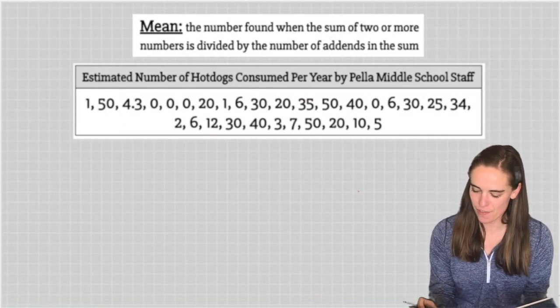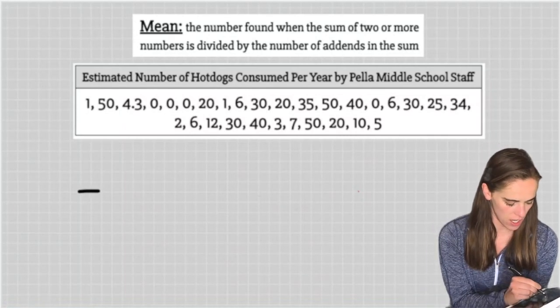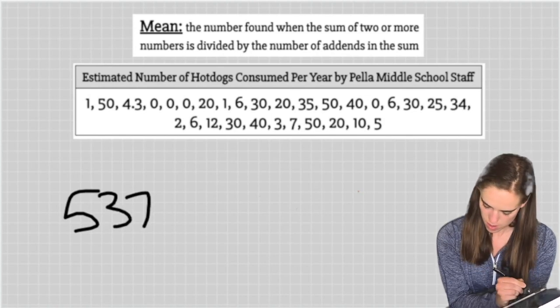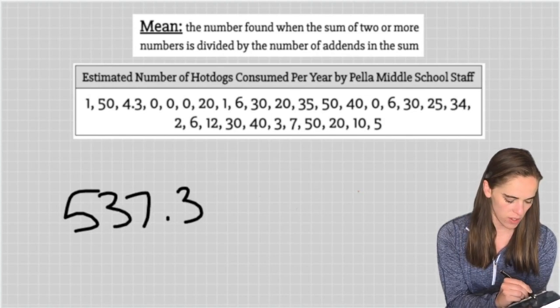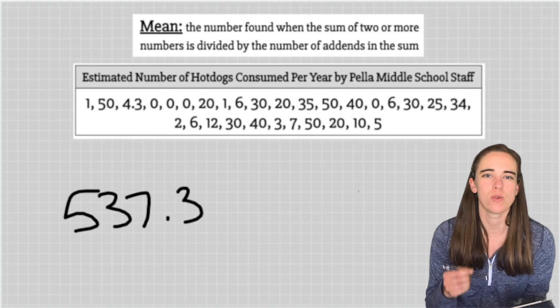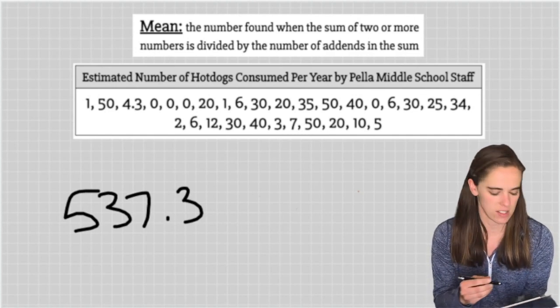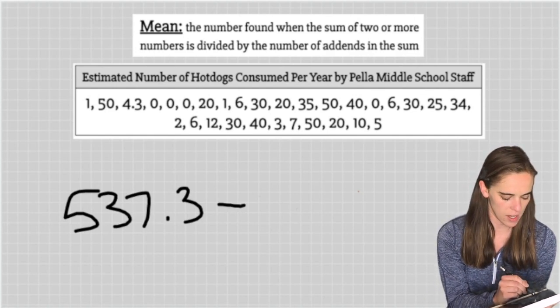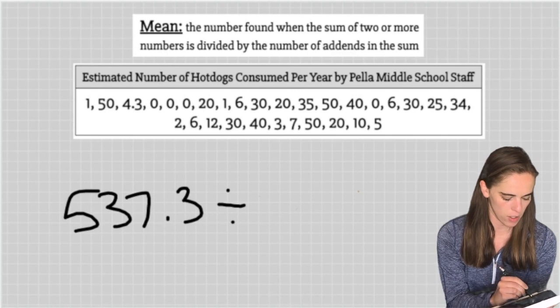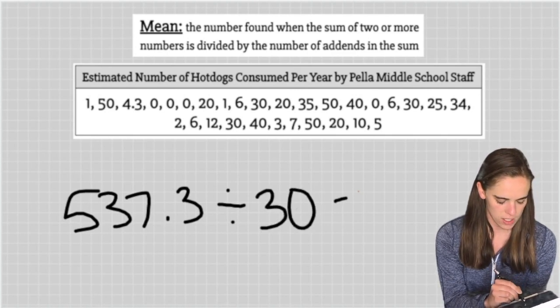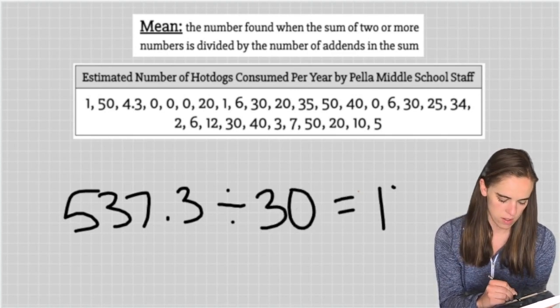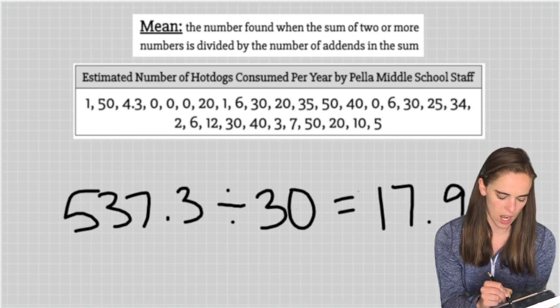When I add them all together, I get a final sum of 537.3. I was able to get information from 30 different staff members, so I'm going to take 537.3 and divide it by 30 to get a mean of 17.91.